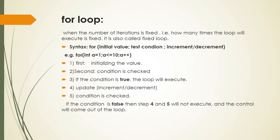The syntax for the for loop is: for (initial value; test condition; increment or decrement). Example: for (int a = 1; a <= 10; a++). It has the following five steps. Step 1: initializing the value — int a = 1 is the initializing value. Step 2: condition is checked — a <= 10. If the condition is true, the loop will execute.